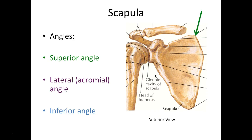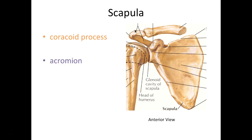Next we have our three angles: the superior angle at the superiormost point; the lateral or acromial angle, named because this is our acromial process or acromion process — also found the most laterally; and lastly our inferior angle, because it's the most inferior. Now we have our two processes. First, the coracoid process, which means crow's beak. A process — add this to your terminology list — means an outgrowth of bone. You can also see this with the acromial process, which too is an outgrowth of bone.